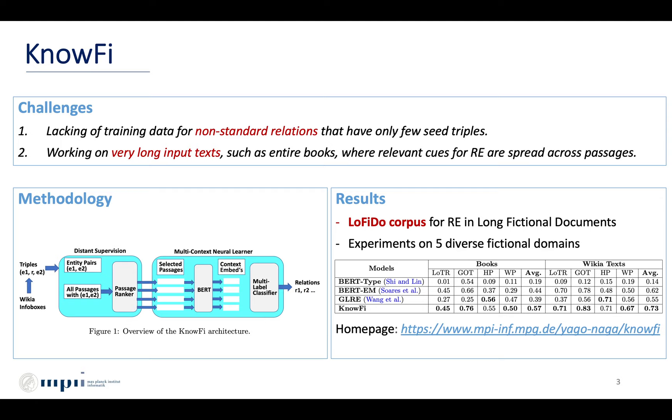Given a long input text, KnowFi judiciously selects a number of context passages containing seed pairs of entities. To infer if a certain relation holds between two entities, KnowFi's neural network is trained jointly for all relations as a multi-label classifier.